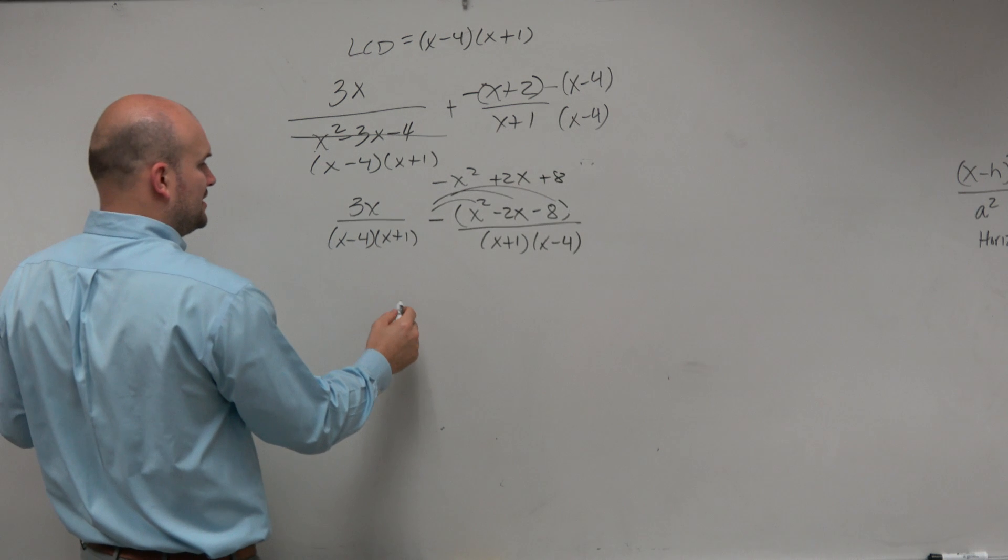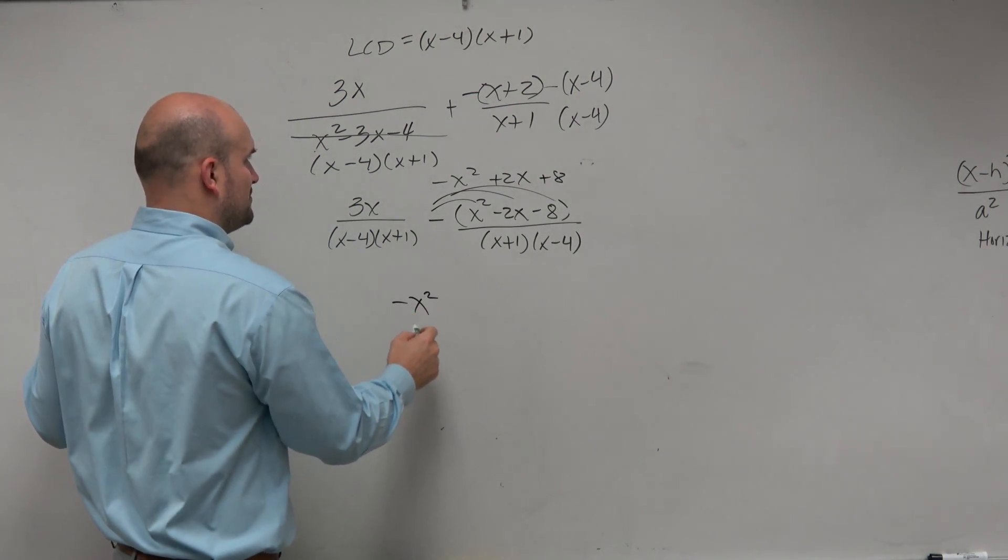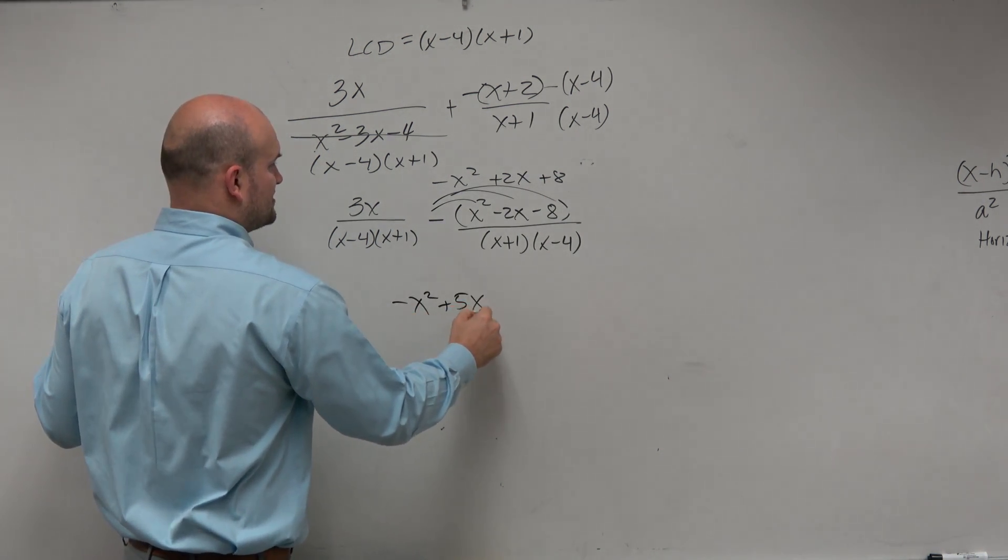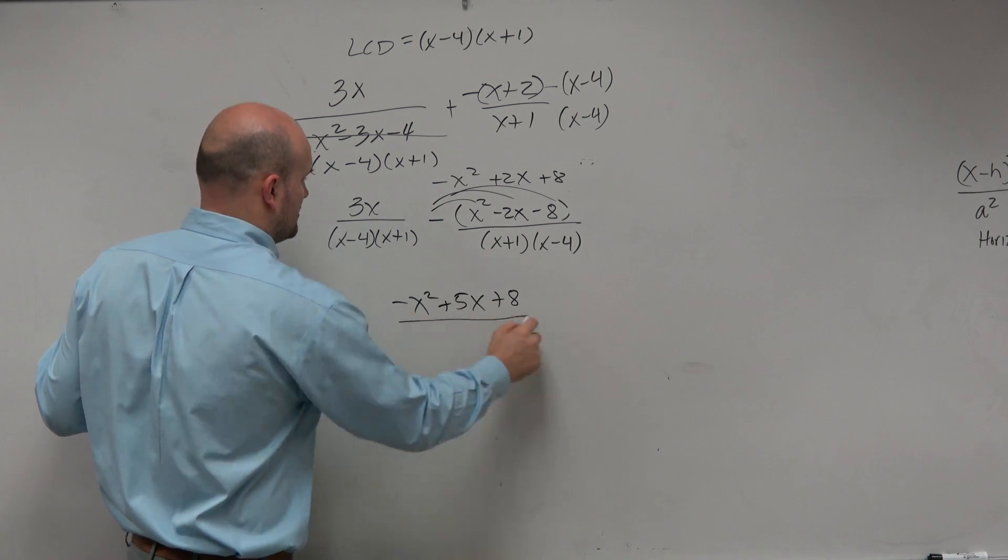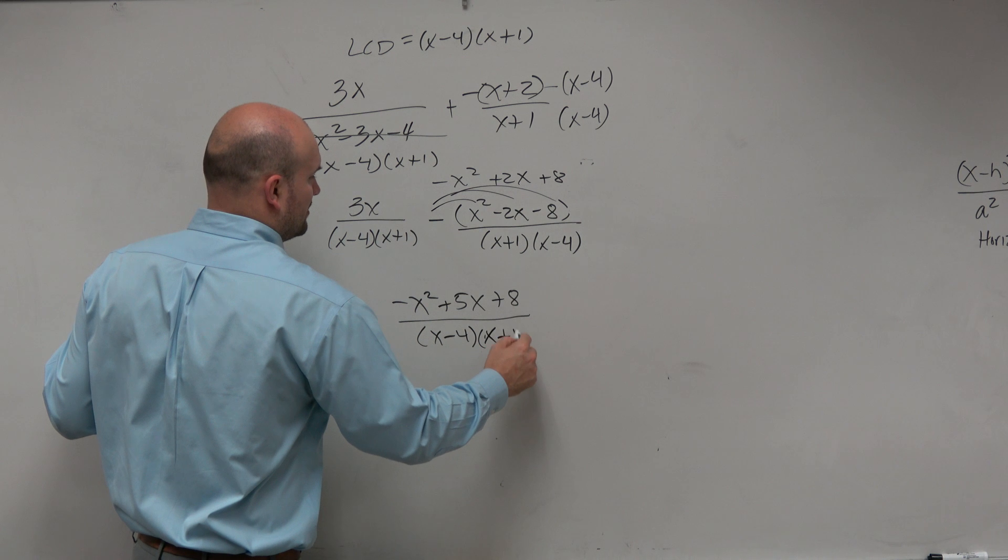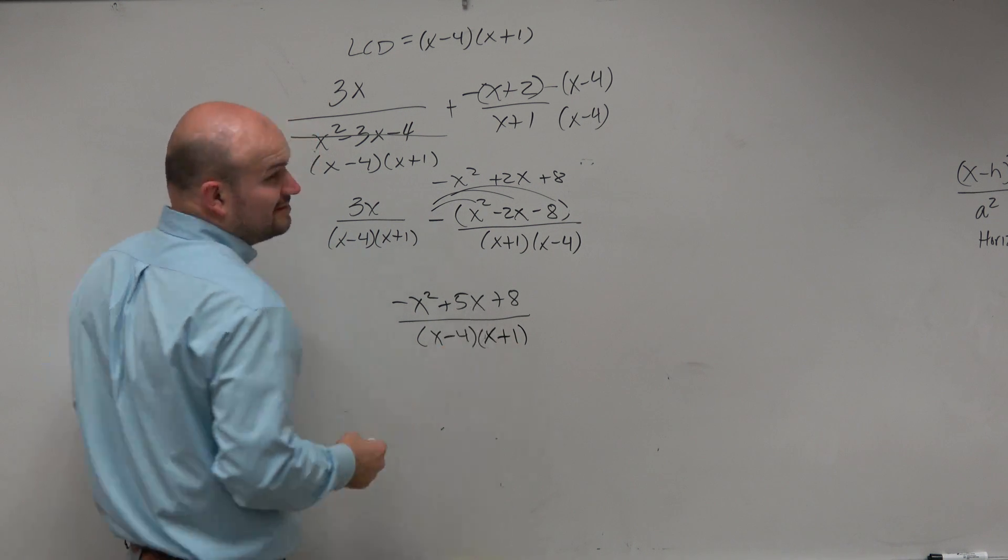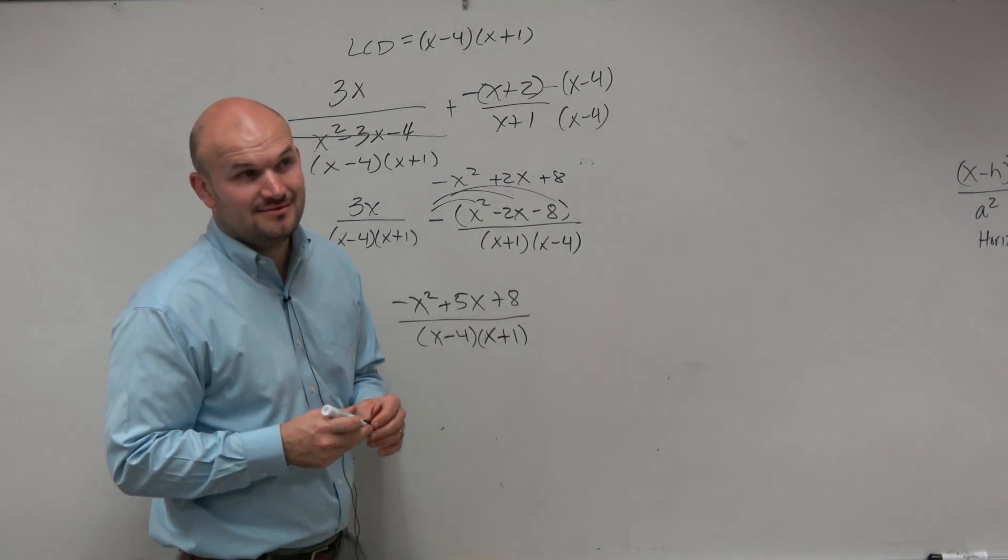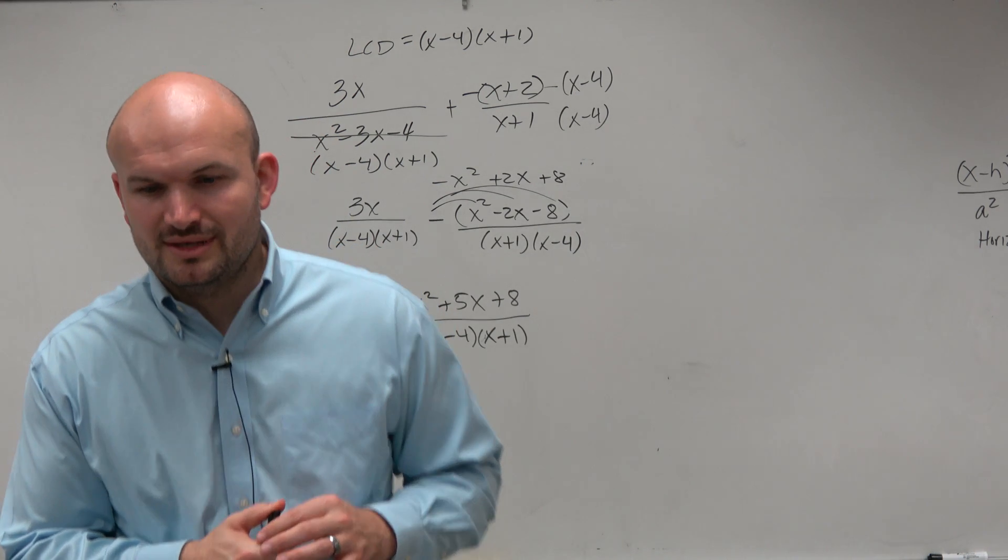Now it's much easier to combine my like terms, which would be negative x squared plus 5x plus 8, all over x minus 4 times x plus 1. Did anybody get that one? Yeah? Well, it's a little bit tricky with the negatives.